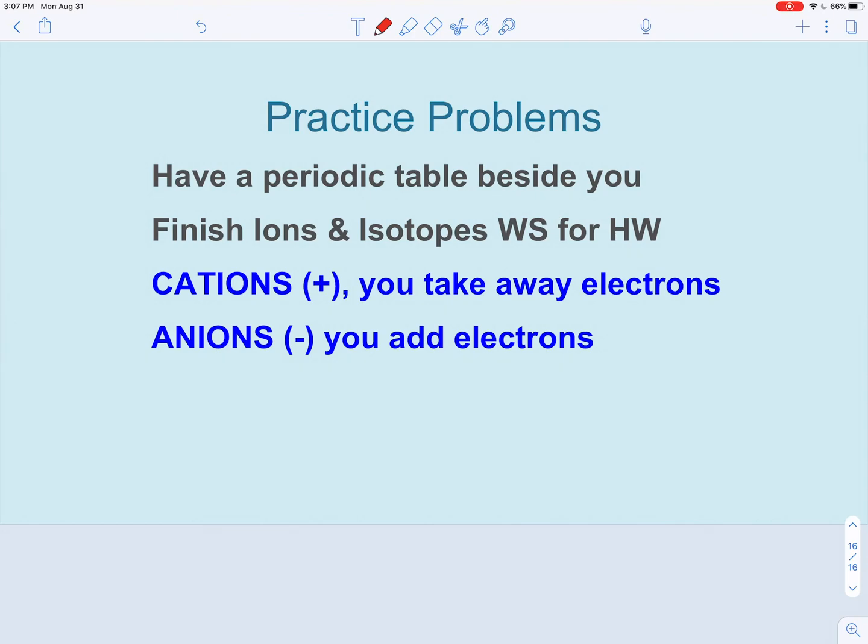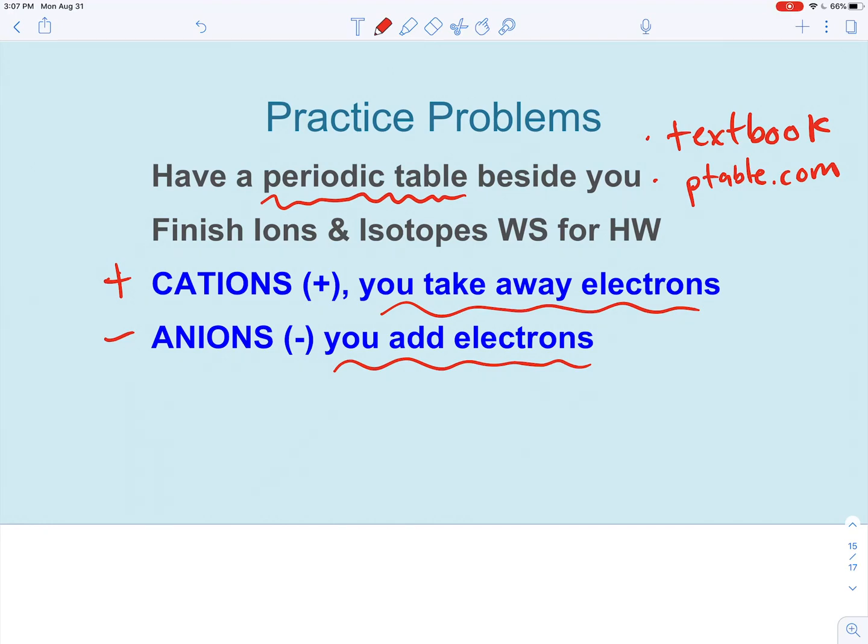You've got tons of practice problems to work on. Please have a periodic table next to you. I recommend printing one out, the one I posted is really clear to see. Otherwise, you can look at your textbook. At the very back of your textbook, you should have a periodic table, or you can use ptable.com. But keep in mind, for quizzes and tests, you won't be able to use that website. And just a few reminders: if you have a cation, positive ions, you want to take away electrons. If you have a negative ion, anions, you're going to add electrons. I hope that was helpful. As always, make sure to ask me questions.